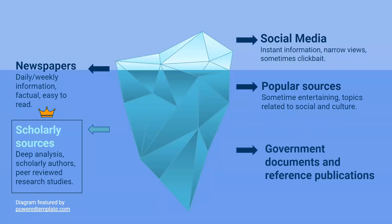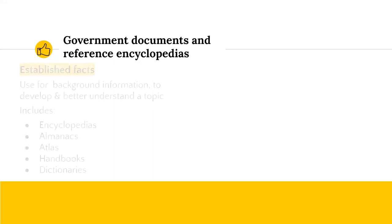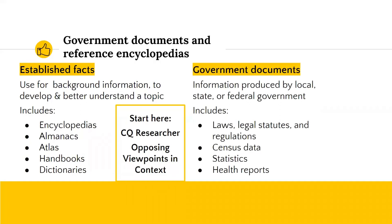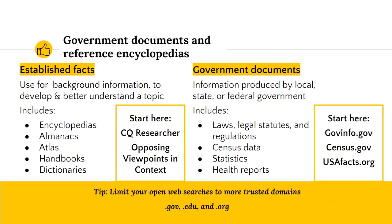Along with scholarly sources, you may need to support your research with other types of evidence or information like government documents and reference material. Reference materials are types of sources that provide established facts and quick background information on any given topic. At CSUB, databases like CQ Researcher and Opposing Viewpoints in Context would be a great place to start developing a topic. Government documents are information produced by local, state, or federal governments — if you need statistics, this might be where you find them. You can search for background information like this on the library's databases or sometimes even on the open web. If you do choose to Google it, try to limit your searches to .gov or .edu to filter out some of the information overload that can occur with a simple Google search.